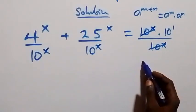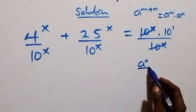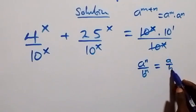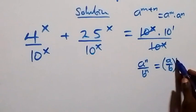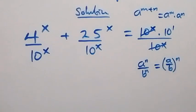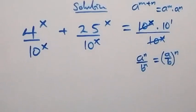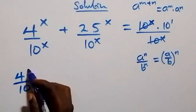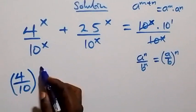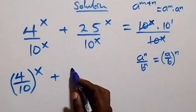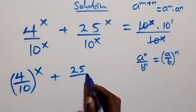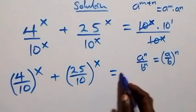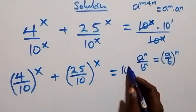From what we have, using the rule that a raised to power n over b raised to power n can be written as (a over b) all raised to power n, this equation becomes (4 over 10) all raised to power x, plus (25 over 10) all raised to power x, equals 10.